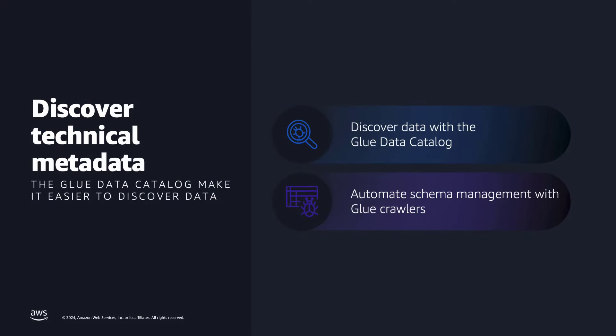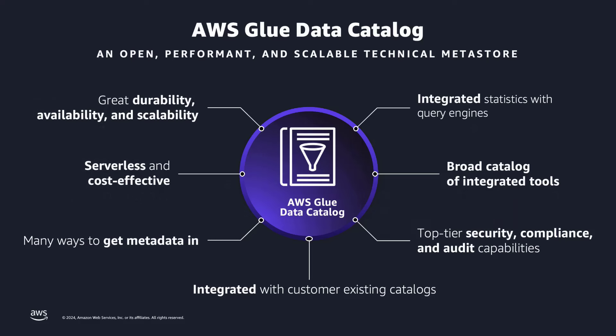Now let's start with technical users. For that, AWS offers the AWS Glue Data Catalog. The AWS Glue Data Catalog is a metadata store for data lakes. It has great durability, availability, and scalability. And it's serverless, cost-effective, and it is integrated with many AWS analytic services and also third-party vendor solutions.